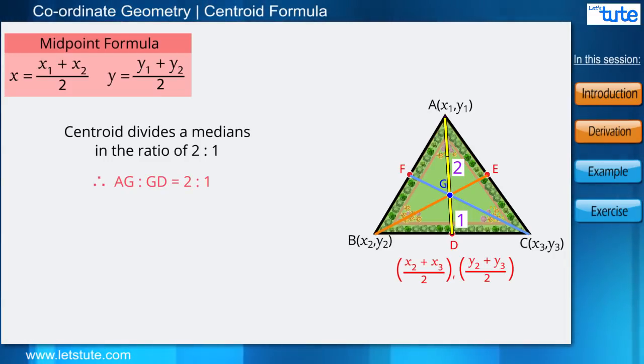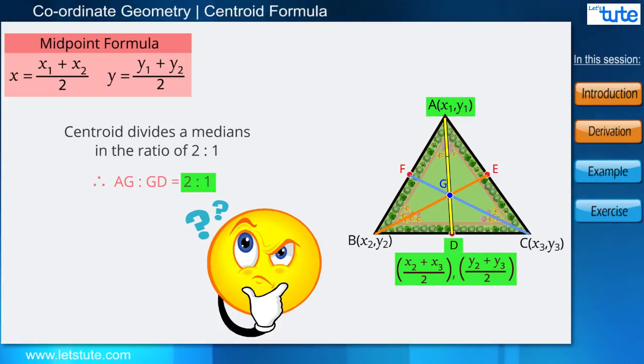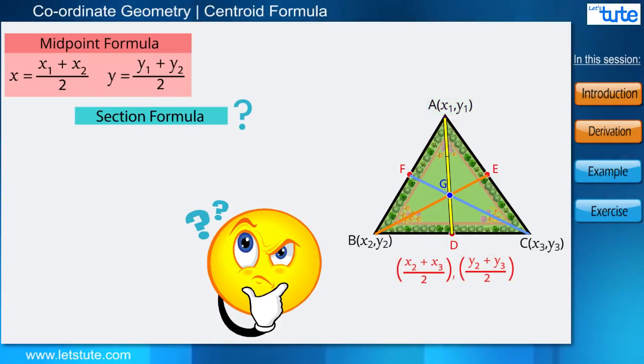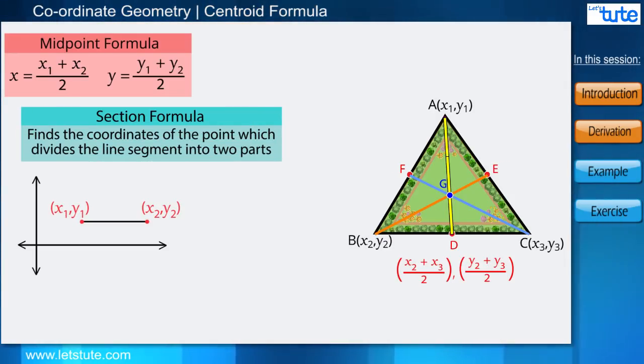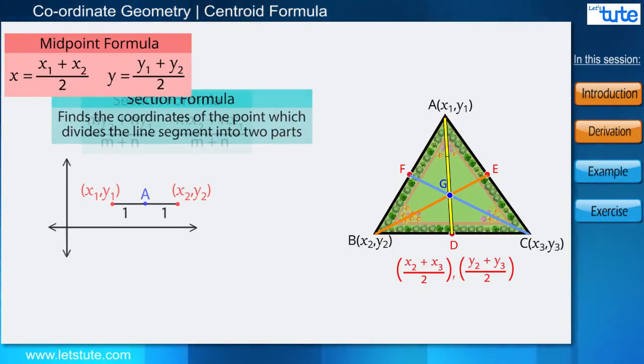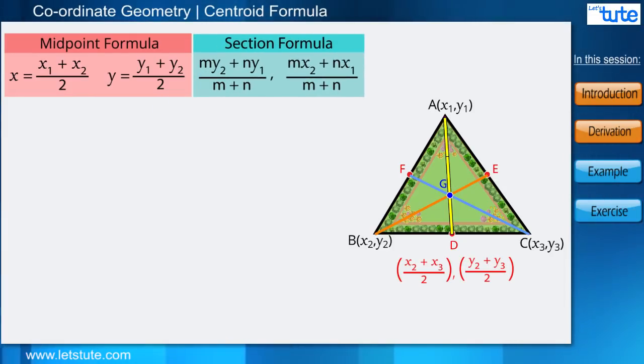We already have coordinates of A and coordinates of D, as well as we have the ratio. So what can be done here? Can we use the section formula here? Yes, as the section formula finds the coordinates of a point which divides the line segment in two parts. So the section formula is here: M is AG and N is GD. x1, x2, y1, y2 will be the coordinates of point...